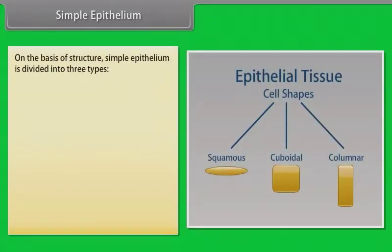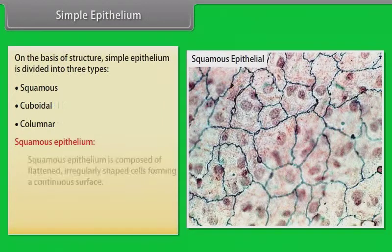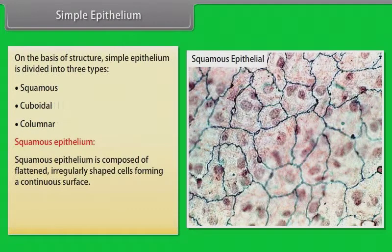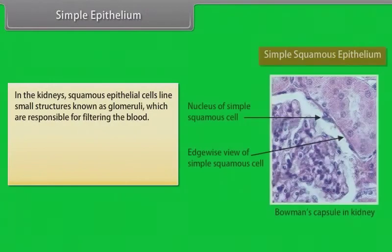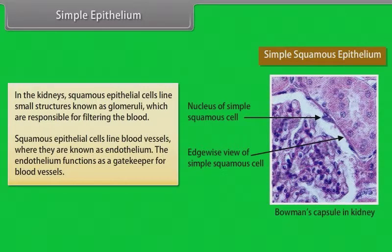Simple epithelium. On the basis of structure, simple epithelium is further divided into three types: squamous, cuboidal, and columnar. Squamous epithelium is composed of flattened, irregularly shaped cells forming a continuous surface. They form the lining of cavities such as the mouth, blood vessels, heart and lungs, and make up the outer layers of the skin. In the kidneys, squamous epithelial cells line small structures known as glomeruli, which are responsible for filtering the blood. Squamous epithelial cells line blood vessels where they are known as endothelium. The endothelium functions as a gatekeeper for blood vessels.